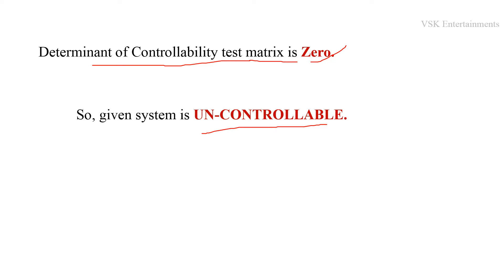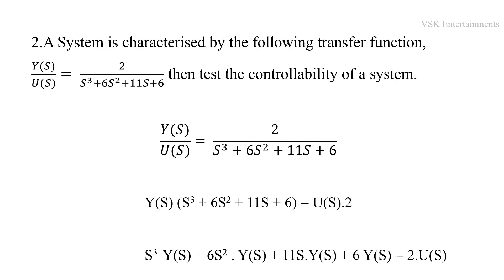This is the procedure for finding the controllability of a given system — one method for testing controllability using Kalman's test.